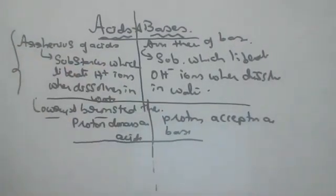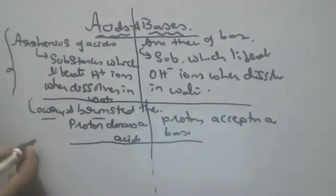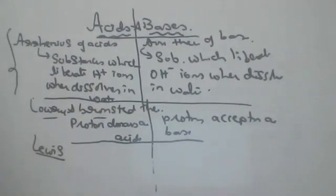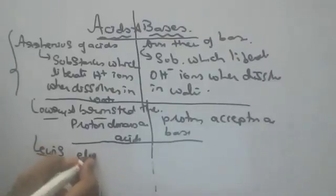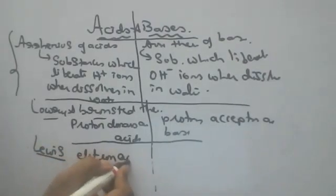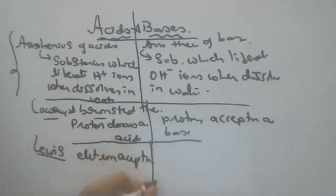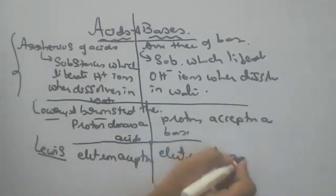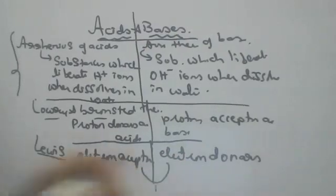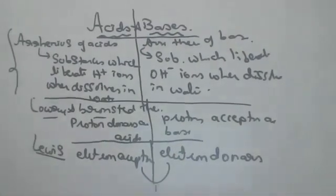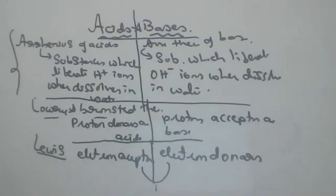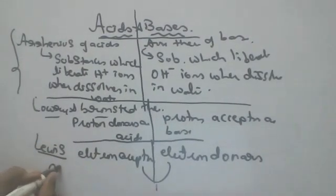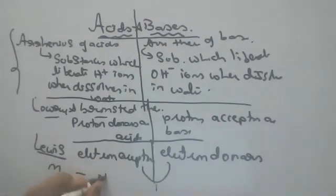The famous theory we follow even today is Lewis theory of acids and bases. Lewis said acids are electron acceptors and bases are electron donors. We have metals and non-metals — everyone knows this.